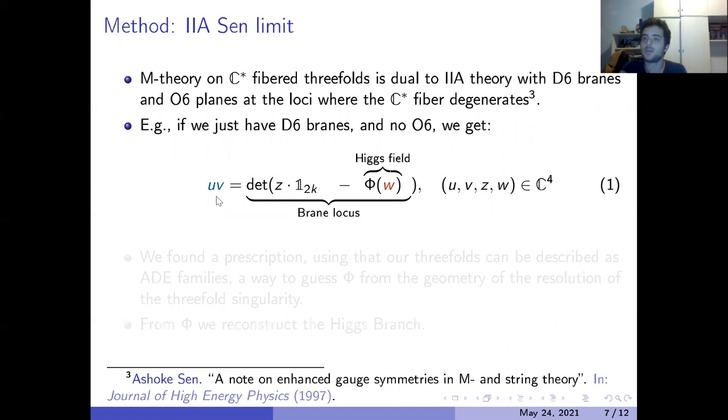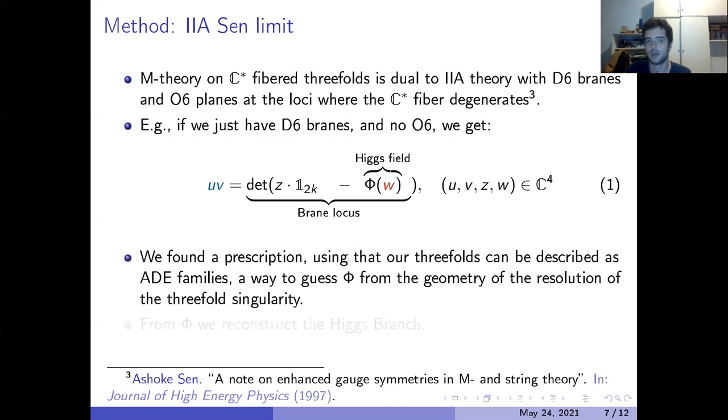The input data are the characteristic polynomial of this Higgs field and the fact that the threefold, apart from admitting the C* fibration, also admits the structure of an ADE family. In particular, in this case it's an A_{2k-1} family, so the central fiber at w equals zero is the A_{2k-1} singularity in equation number one with variables u, v, and z, and then the w coordinate deforms the fiber and in particular smooths the singularity.